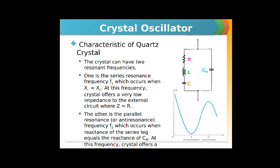We will discuss the characteristics of quartz crystal. As shown in the figure, the crystal can have two resonant frequencies. One is the series resonance frequency, F1, which occurs when XL is equal to XC, as shown in the figure. At this frequency, the crystal offers a very low impedance to the external circuit, where Z is equal to R.